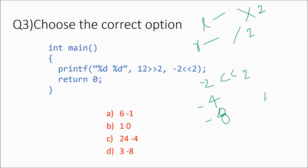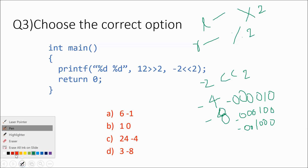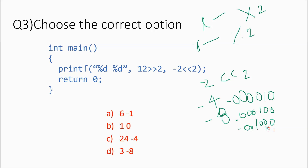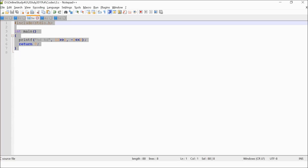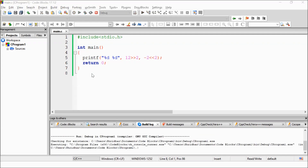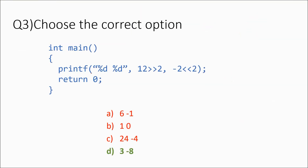In binary, -2 is represented with the sign bit. After two left shifts the bit pattern shifts left twice, yielding a value whose magnitude bits represent 8 with the sign bit set, giving -8. So the answer is 3 and -8, which is option D. Running the program confirms we get 3 and -8 — option D is correct.